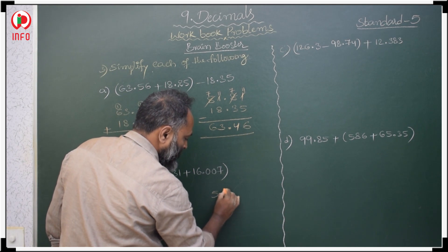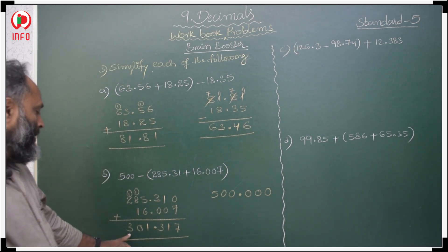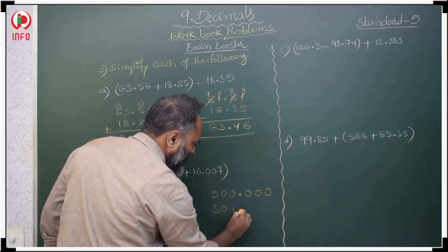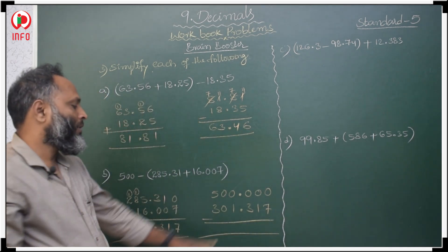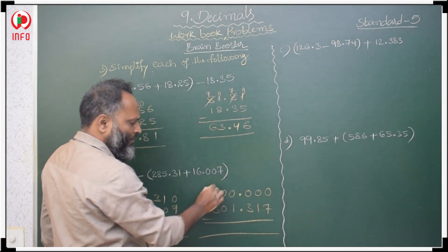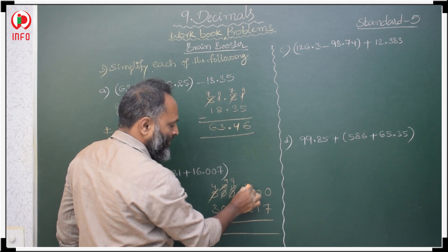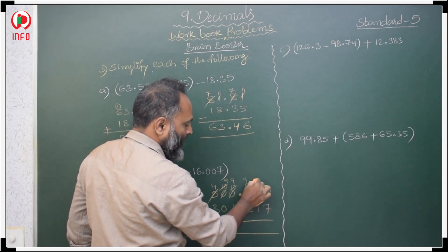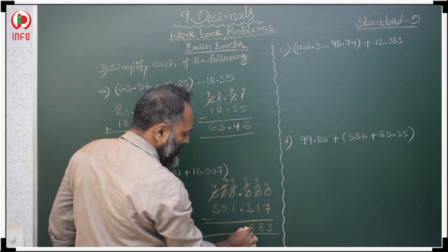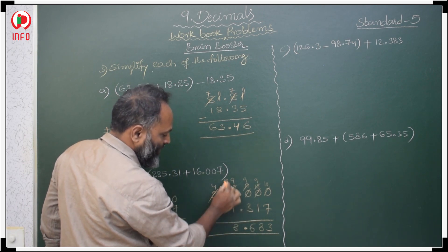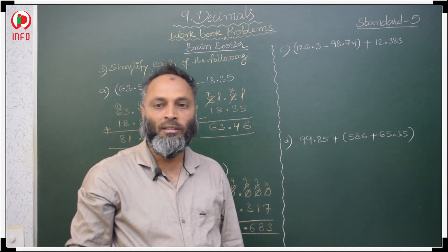Take 500 with no decimal, so write 500.000. Borrow repeatedly: get 4 and 10; again 9 and 10; again 9 and 10; again 9 and 10. Then: 10 minus 7 is 3; 9 minus 1 is 8; 9 minus 3 is 6 point; 9 minus 1 is 8; 9 minus 0 is 9; 4 minus 3 is 1. The answer is 198.683.